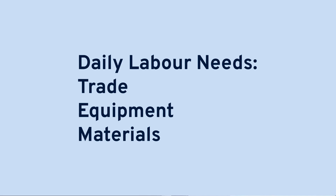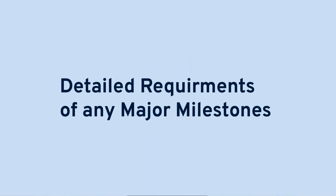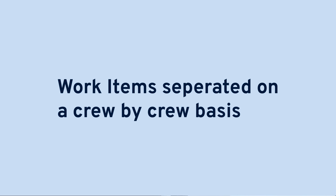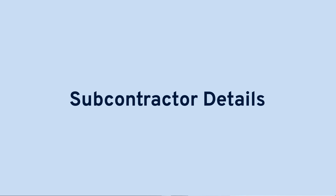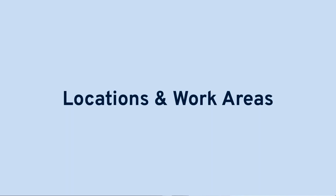When it comes to building a look-ahead, there are a few popular things that are normally included. Consider things like daily labour needs separated by trade, equipment and materials needed on a particular day, detailed requirements of major milestones, work items separated on a crew-by-crew basis, material deliveries, and subcontractor details, locations, and work areas. These are just a few of the most common choices, and in reality your look-ahead could include a whole lot more. If you're managing your look-ahead plans with Aphex, then all of this is a lot easier to stay on top of than it might sound.